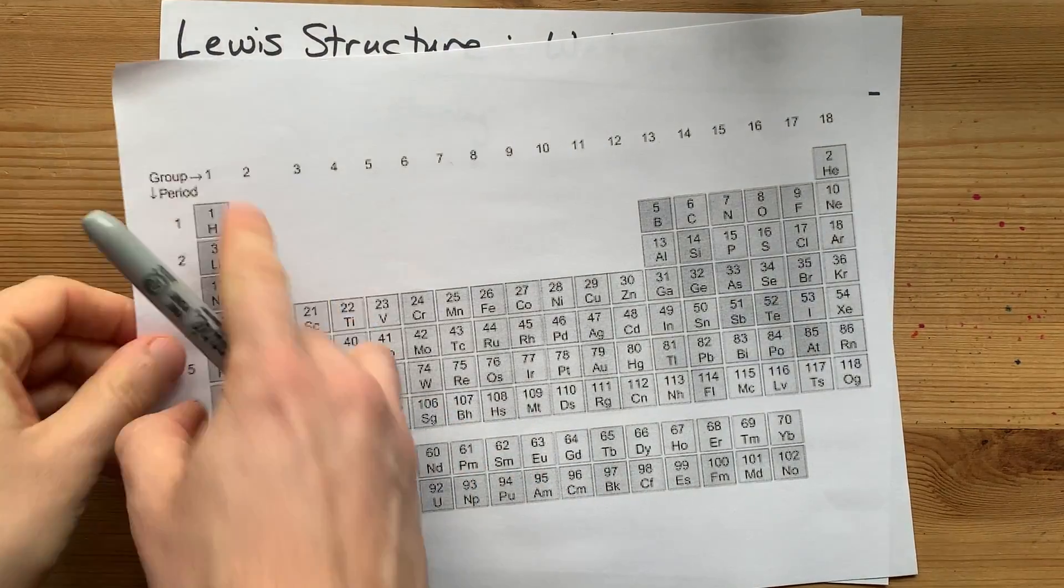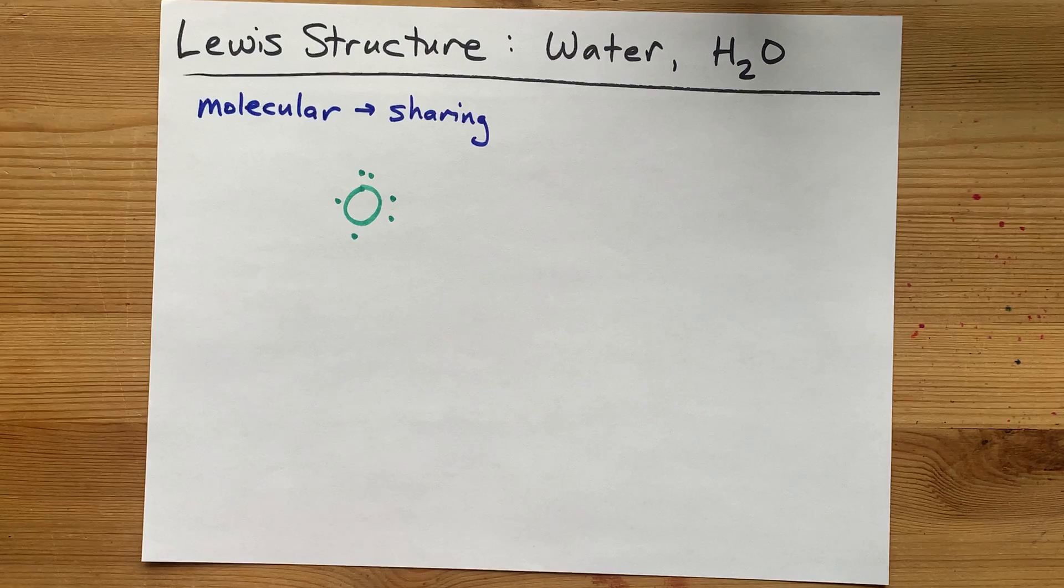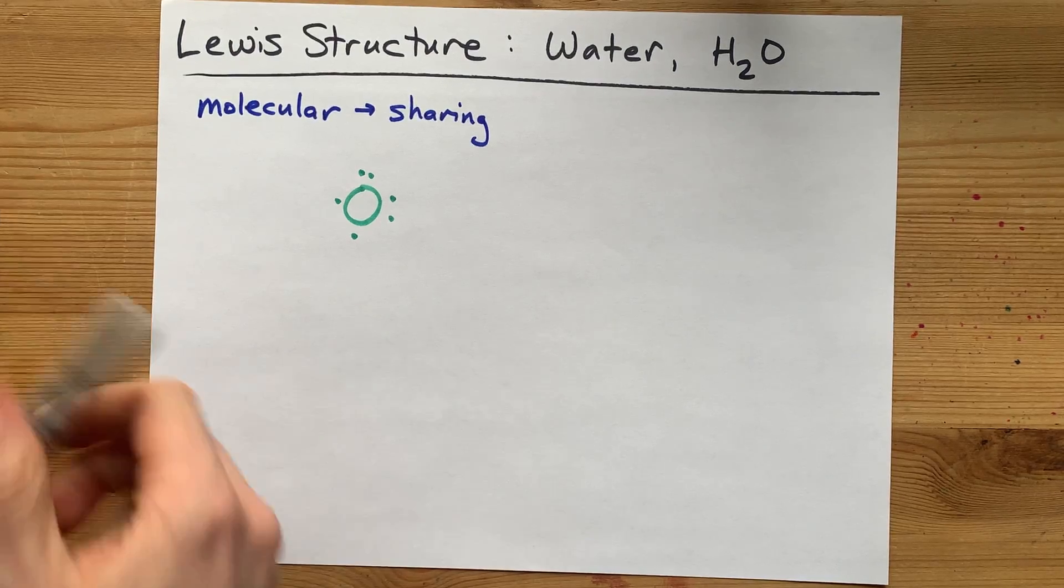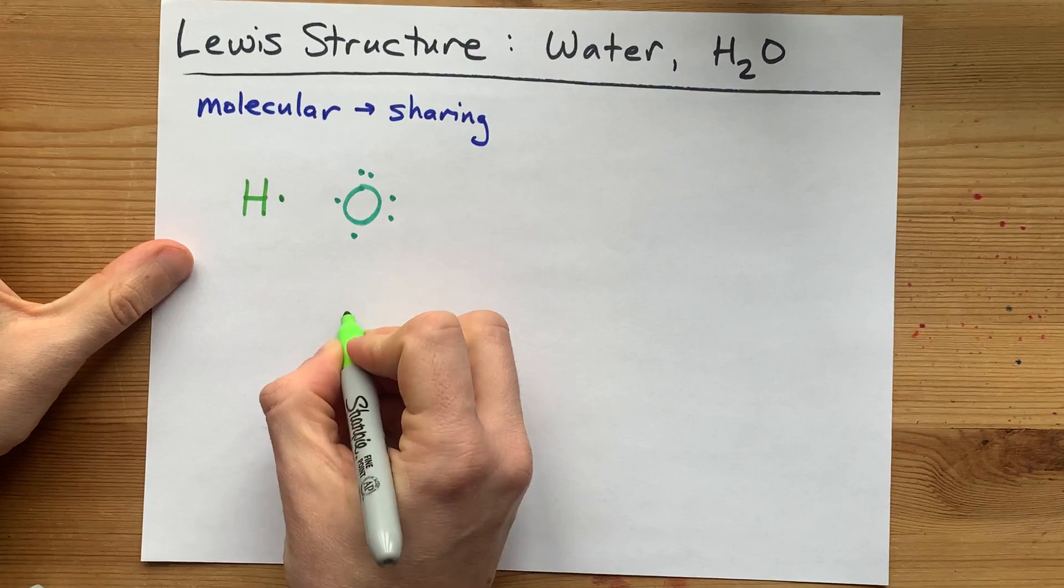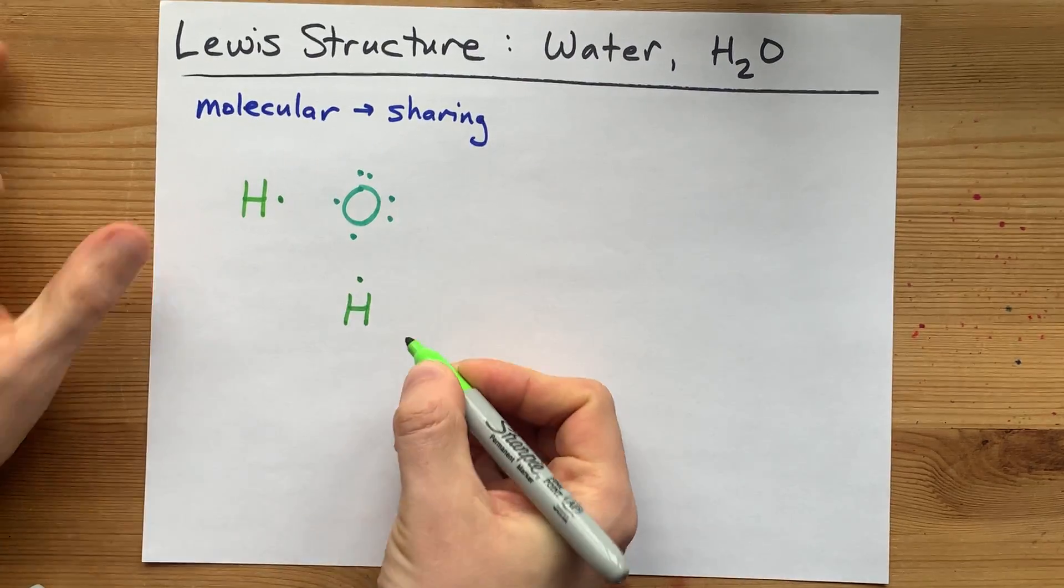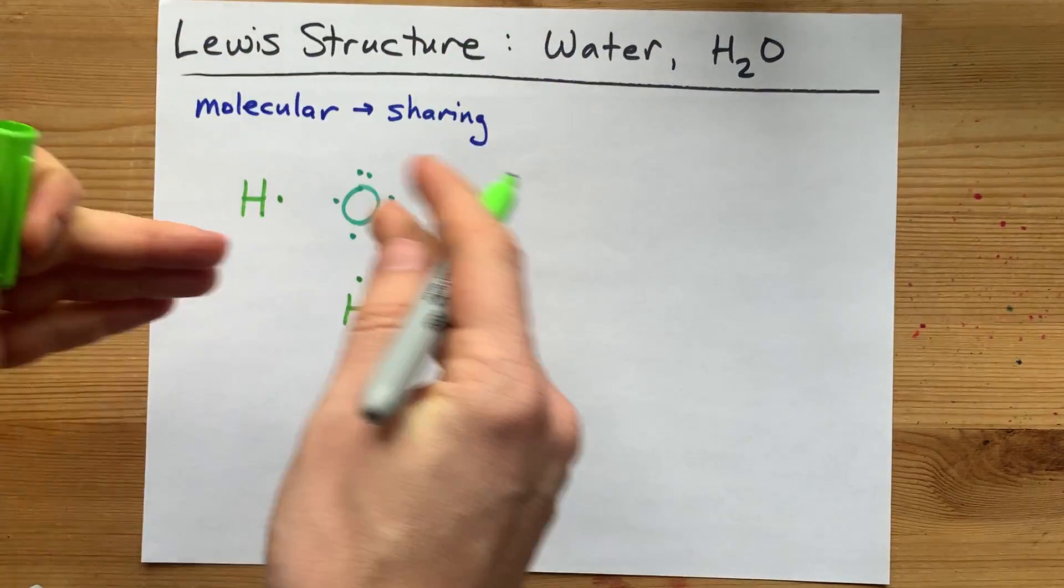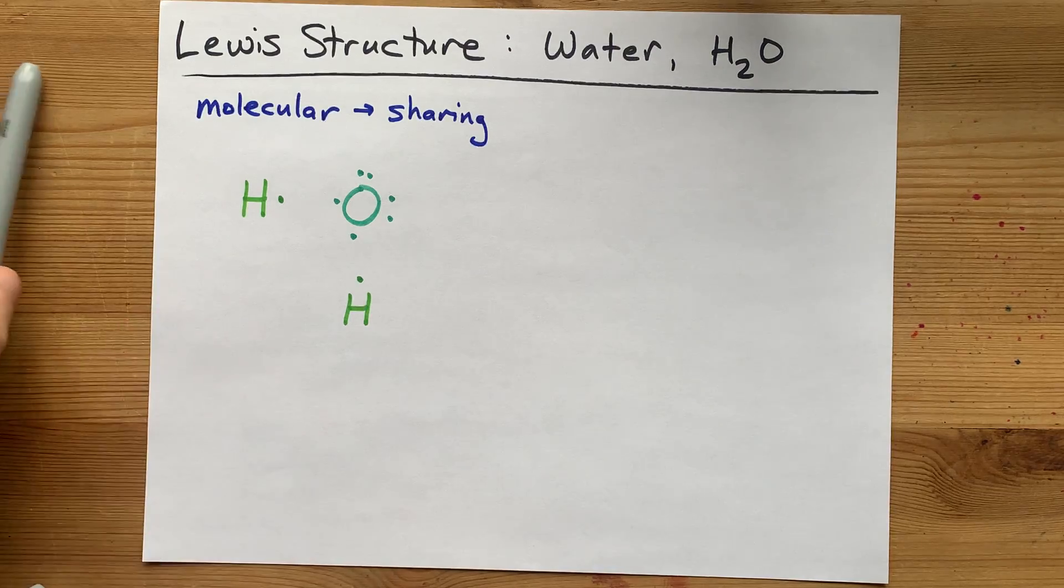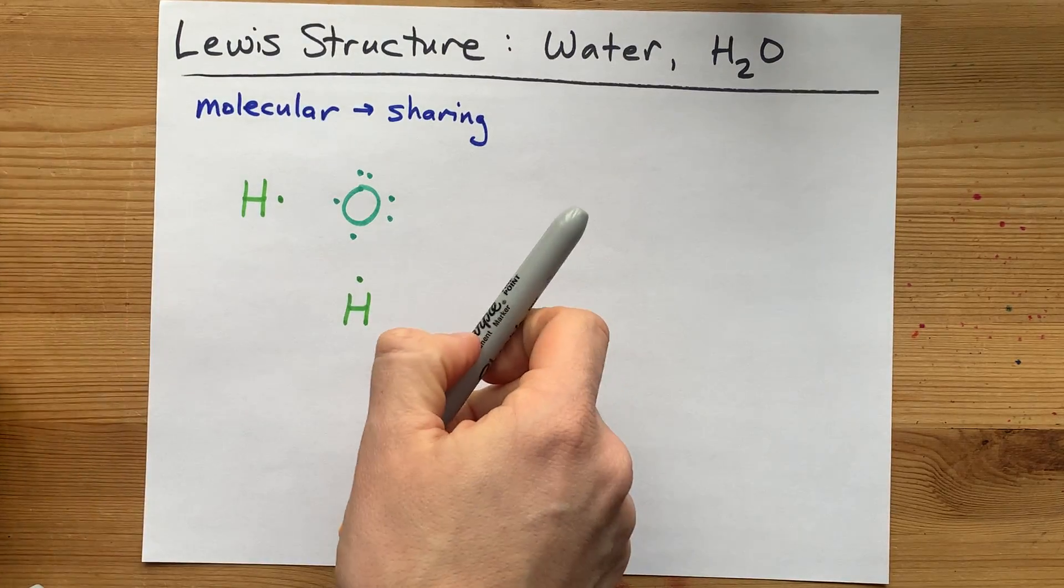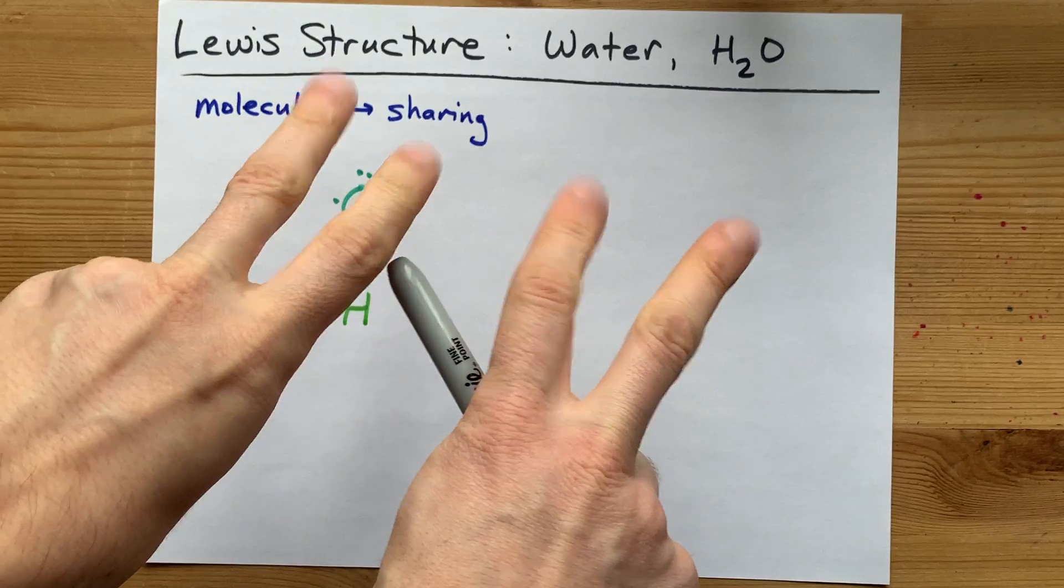Hydrogens in group one, so it brings one valence electron. I'm going to draw that here. Hydrogen with a one. Hydrogen with a one. Now, I'm just spreading those out a bit. What matters is that oxygen needs a full octet...